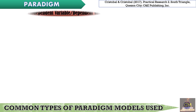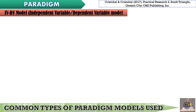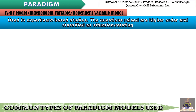Next, we have the IV-DV model, also known as the independent variable-dependent variable model. The IV-DV model is used in experiment-based studies. The questions raised are higher-order and classified as situation-related. In experimental studies, we have the presence of independent variables which influence the dependent variables, which are then observed and measured by the researchers.